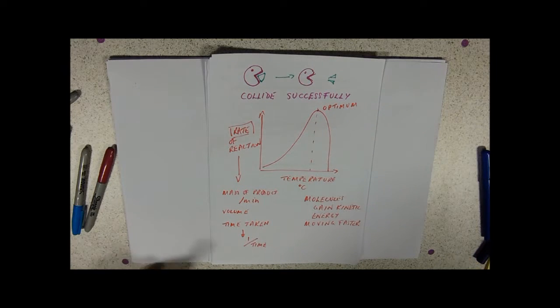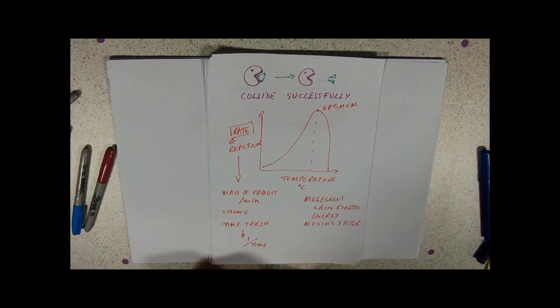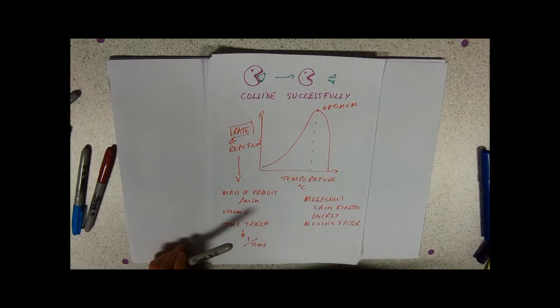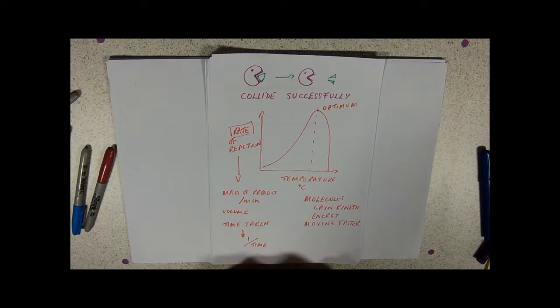So there are thermophiles, organisms that live in hot springs for example, where the optimum's going to be higher. There are ones that live in places that are cold that are going to have lower optimums than that. And it's only really for humans and mammals and things that live in us that have these optima of around about 37 degrees.